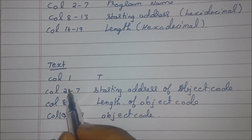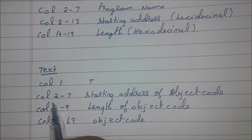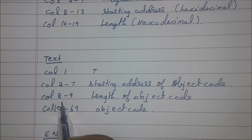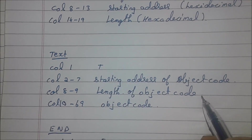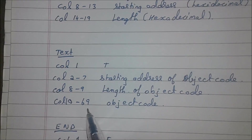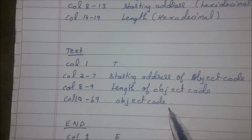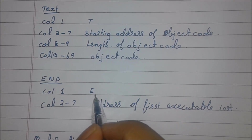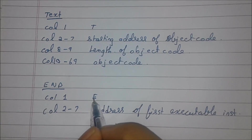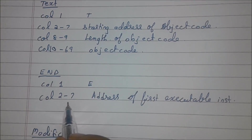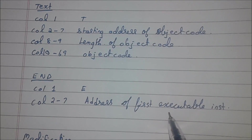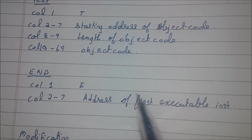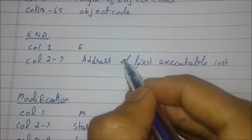Similarly for the text record: column 1 will be T, column 2 to 7 will be the address of the object code, column 8 to 9 will be the length of the object code, and column 10 to 69 will be the object code. For the end record: column 1 will have alphabet E, then column 2 to 7 is the address field of the executable instruction — that means the starting address. If you don't know, just write first.